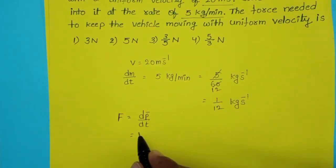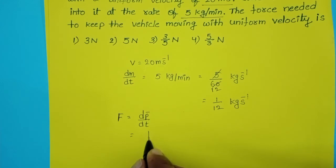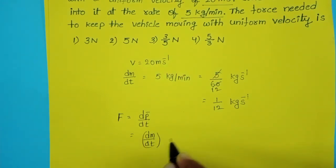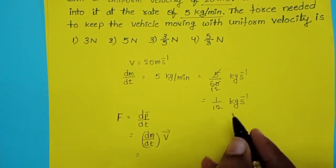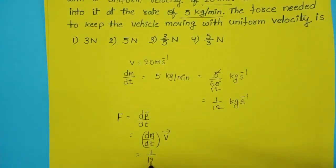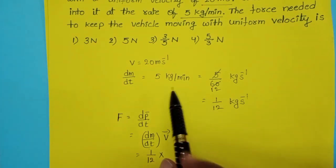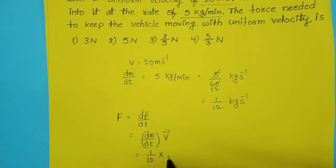Here velocity of the vehicle is constant, so in place of P, take dm/dt times V. In place of dm/dt, take 1/12. The uniform velocity of the vehicle is 20 meters per second.